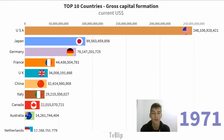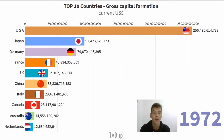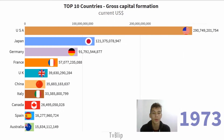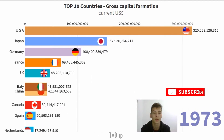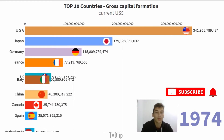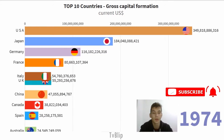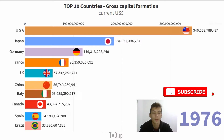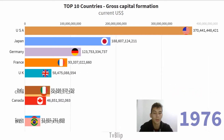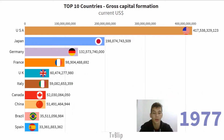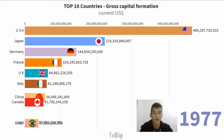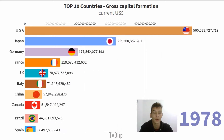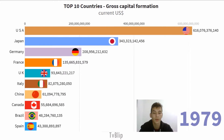This also includes machinery and equipment purchases, and the construction of roads, roadways, schools, offices, hospitals, private residences and dwellings, and commercial buildings, as well as inventory stocks of goods held by firms to meet temporary or unexpected variations in production or sales.